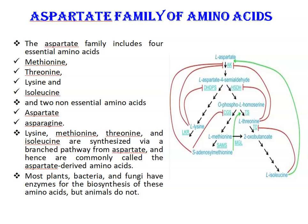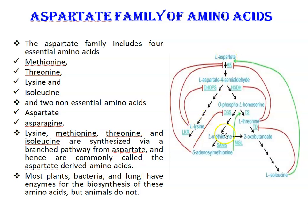Four essential amino acids are synthesized via a branched pathway from aspartate, where the precursor or starting material is aspartate. Lysine, threonine, methionine, and isoleucine are synthesized via this branched pathway and are hence commonly called aspartate-derived amino acids. Most plants, bacteria, and fungi have enzymes for the biosynthesis of these amino acids, but animals do not. Methionine, threonine, lysine, and isoleucine are not synthesized by humans and should be supplemented in the diet.